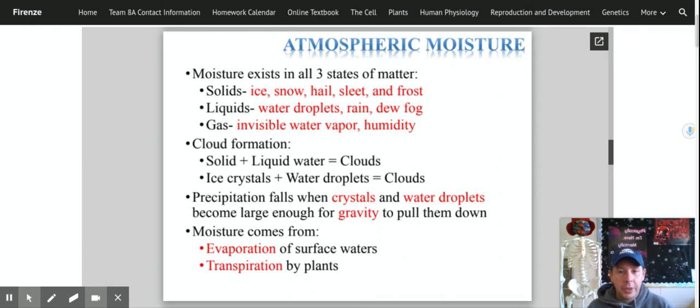So evaporation happens when the water on the earth's surface in oceans, lakes, rivers, puddles on the sidewalk, when it warms up enough that the liquid turns into water vapor and it goes up into the air. And like I said before, it gets high enough, it gets cold, and then it comes back into liquid water form.